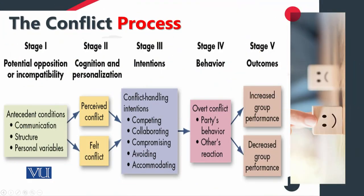In this conflict process, there are different stages from stage 1 to stage 5. Stage 1 is talking about potential opposition and incompatibility. In this stage, there are certain antecedent conditions which might include a communication gap, some structural problem or issue, or personal variables which can differ between people's personalities.